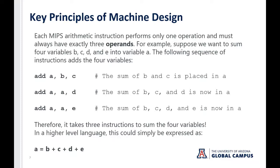As you can see, it takes three instructions to sum the four variables. In a higher level language this would be much easier — expressed simply as A equals B plus C plus D plus E. But when operating at the processor level, it takes three discrete instructions to sum those four variables.